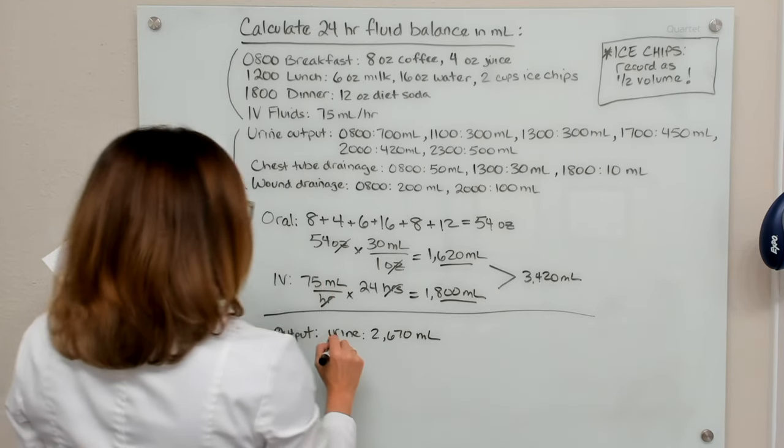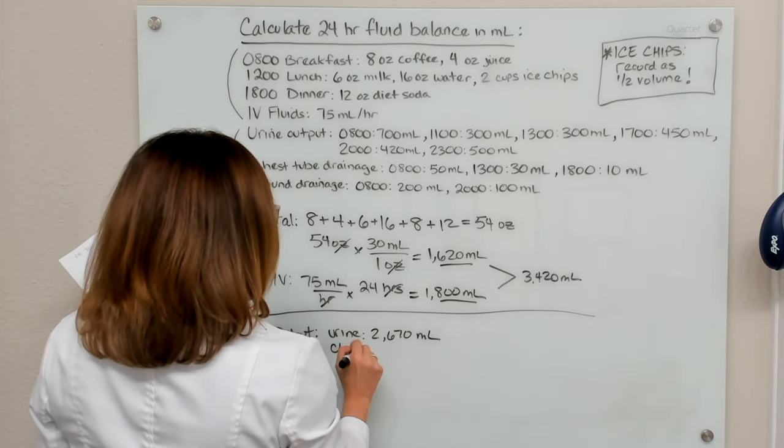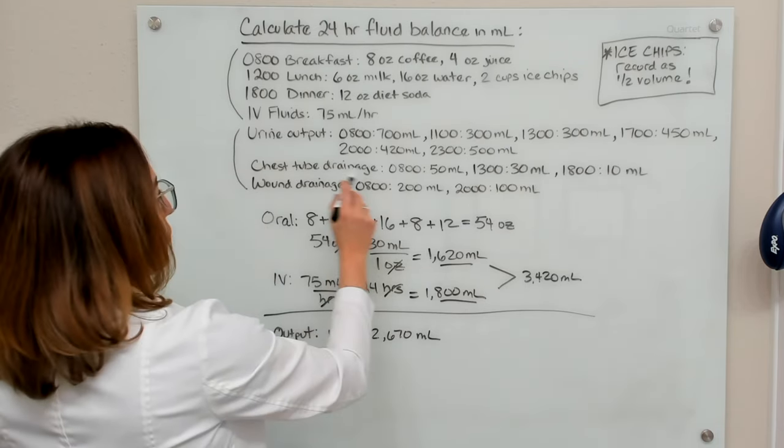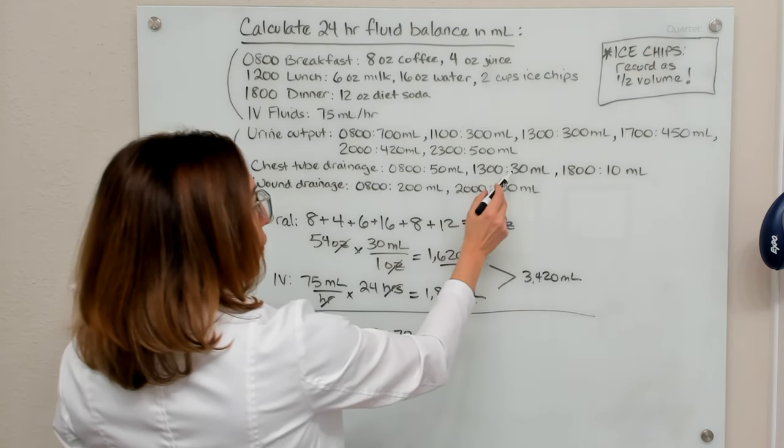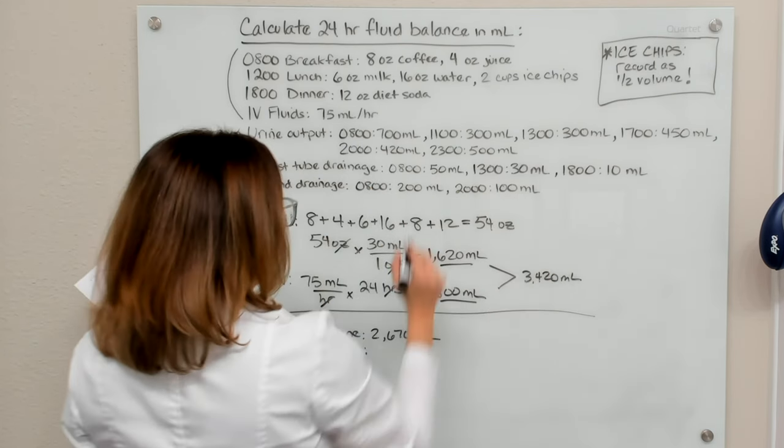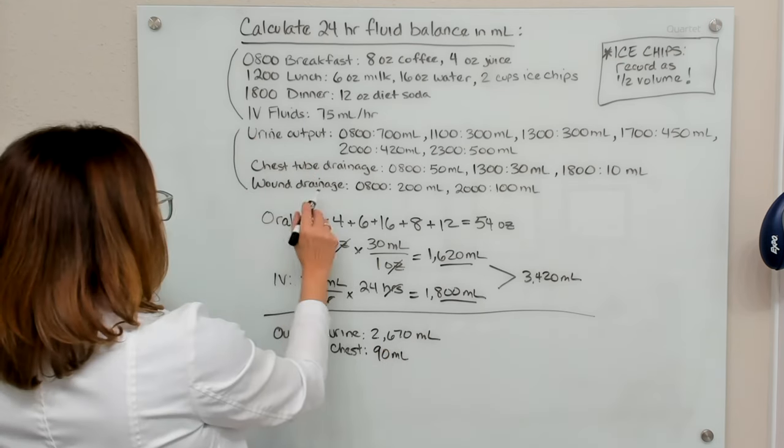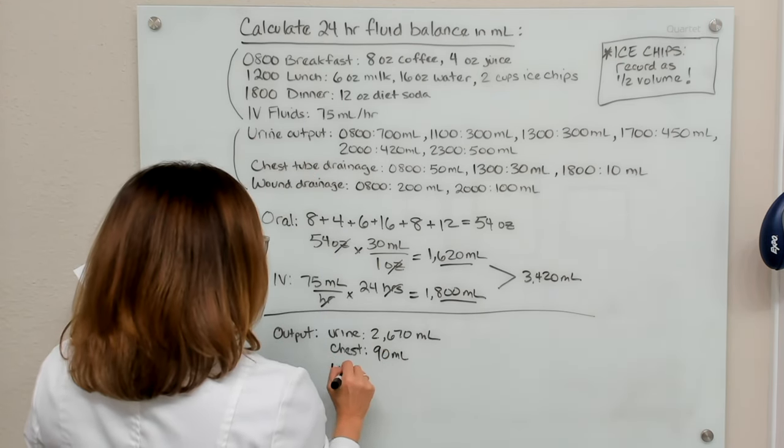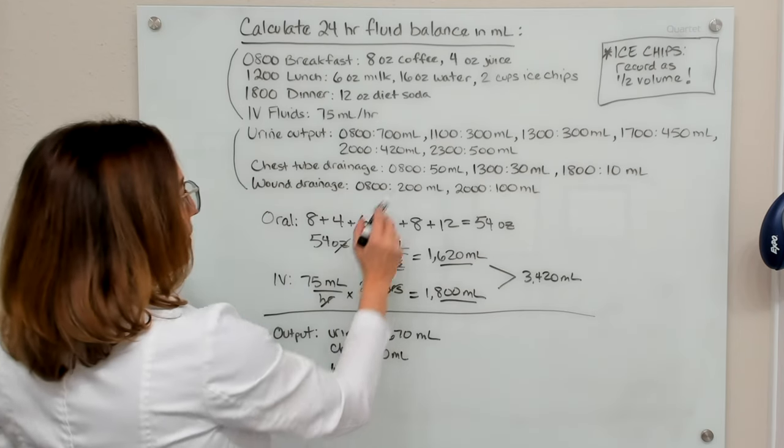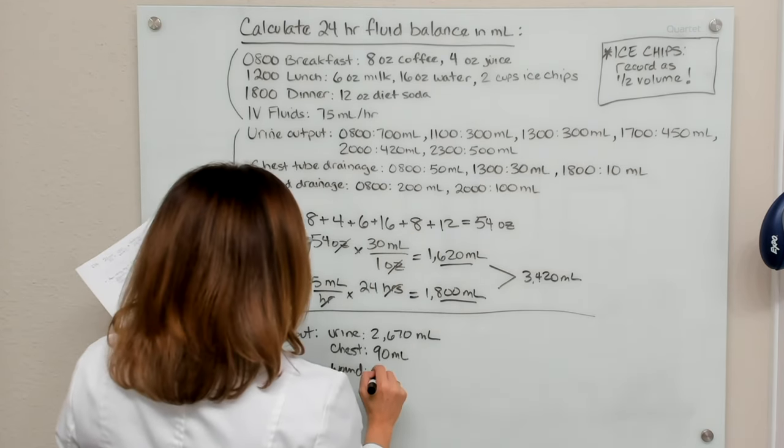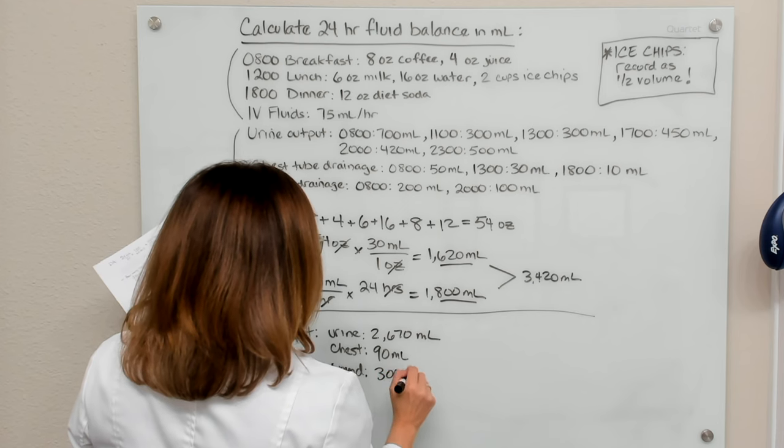And then for the patient's chest tube, they've had drainage of 50, 30, and 10. So if we add that together, we get 90 mLs. And then wound drainage for this patient has been 200 mL and then 100 mLs. So that's 300 mLs.